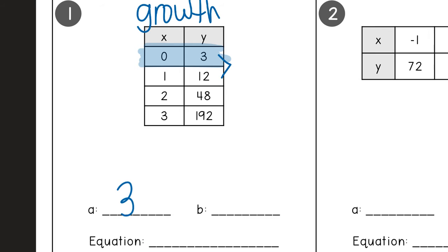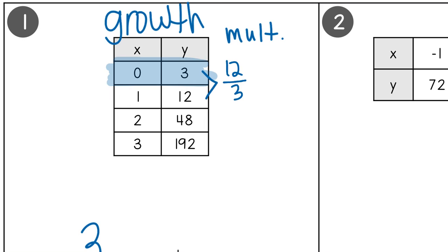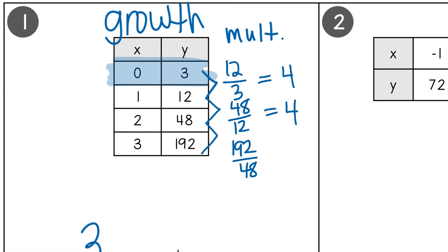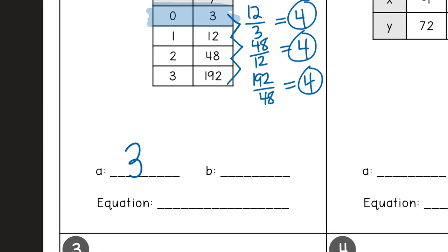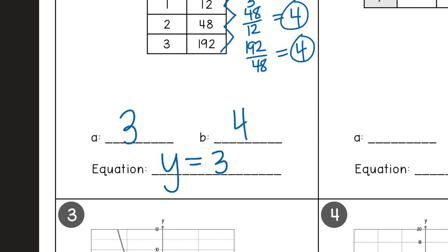So how do I find exactly what B should be? From 3 to 12, how much would you have to multiply by? If you can't see that very easily, you can get the second number 12 and divide it by the first number — and that gives us 4. It's called a common ratio because it should be the same every single time. From 12 to 48: 48 divided by 12 is again 4. And 192 divided by 48 is again 4. So that number is our B value. Now that I have both A and B, I'm going to write the equation: y equals 3 times 4 to the x power. That is the equation for that table.